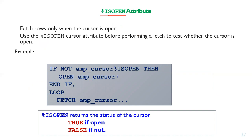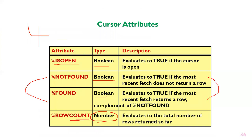The first attribute is %ISOPEN. You can fetch rows only when the cursor is open. You can use the %ISOPEN cursor attribute before performing a fetch to test whether the cursor is open. This attribute is useful because you can check its status — since it is going to return a boolean value, it will return either true or false.